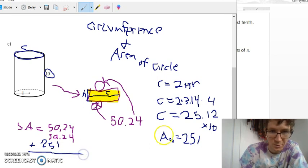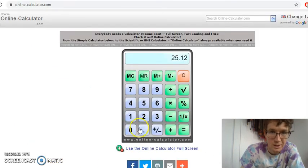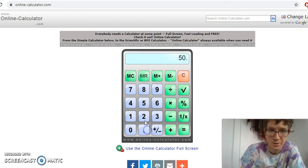So 50.24 plus 251.2 plus another 50.24. So it should be about 350, but let's just get the exact answer. So 251.2 plus 50.24 plus 50.24 equals 351.7.